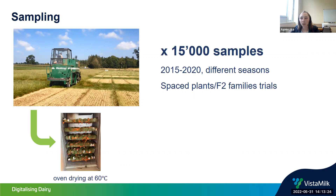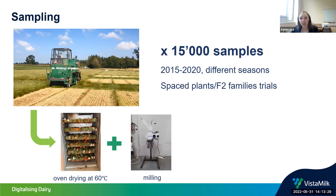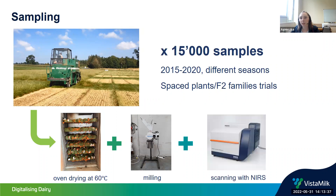After each sample was cut, we had to process it: we started with oven drying at 60 degrees, then milled the sample to obtain as homogeneous material as possible, and then obtained NIR scans for each of the samples.